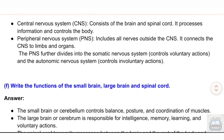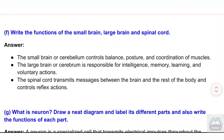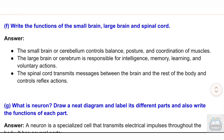(f) Write the functions of the small brain, large brain, and spinal cord. Answer: The small brain (cerebellum) controls balance, posture, and coordination of muscles. The large brain (cerebrum) is responsible for intelligence, memory, learning, and voluntary actions. The spinal cord transmits messages between the brain and the rest of the body and controls reflex actions.